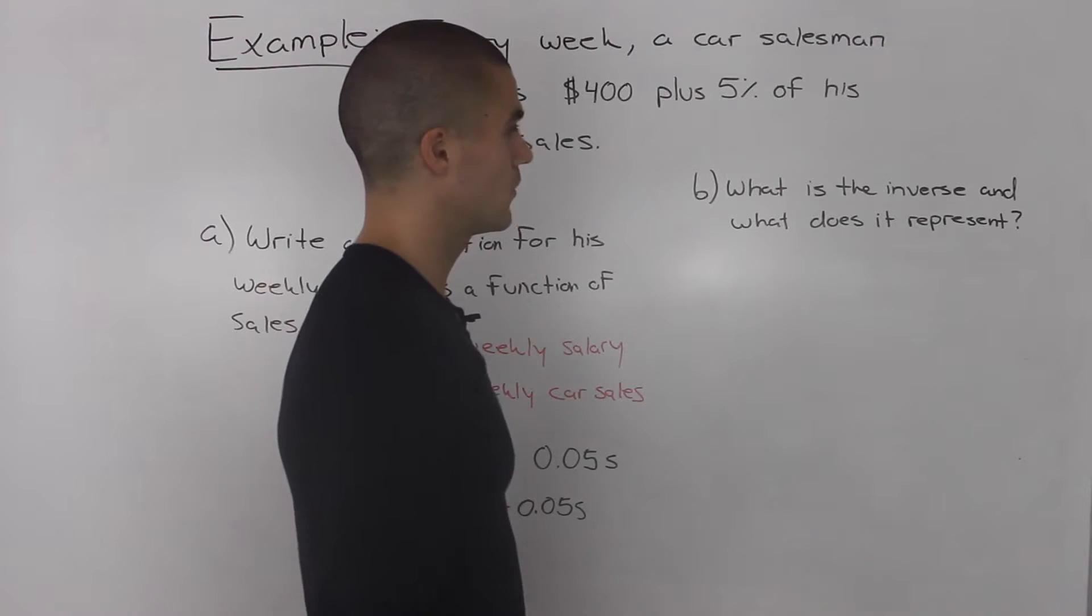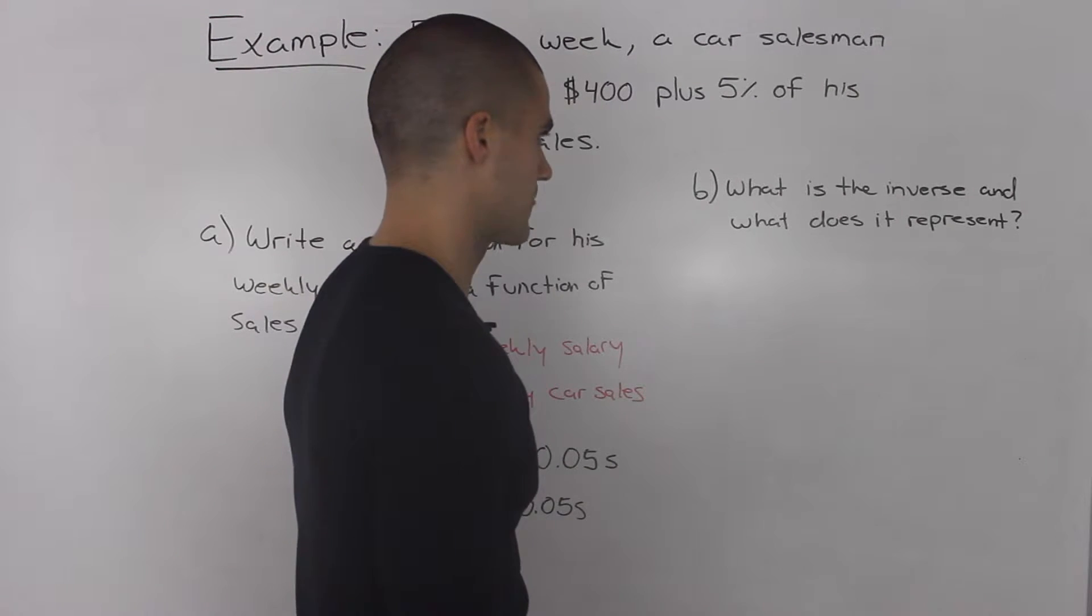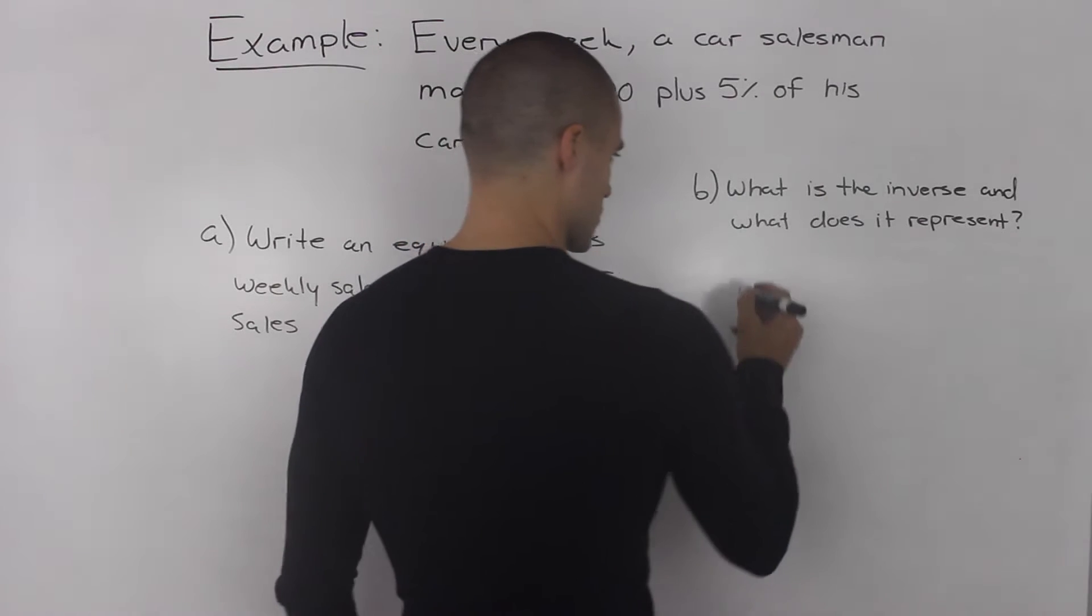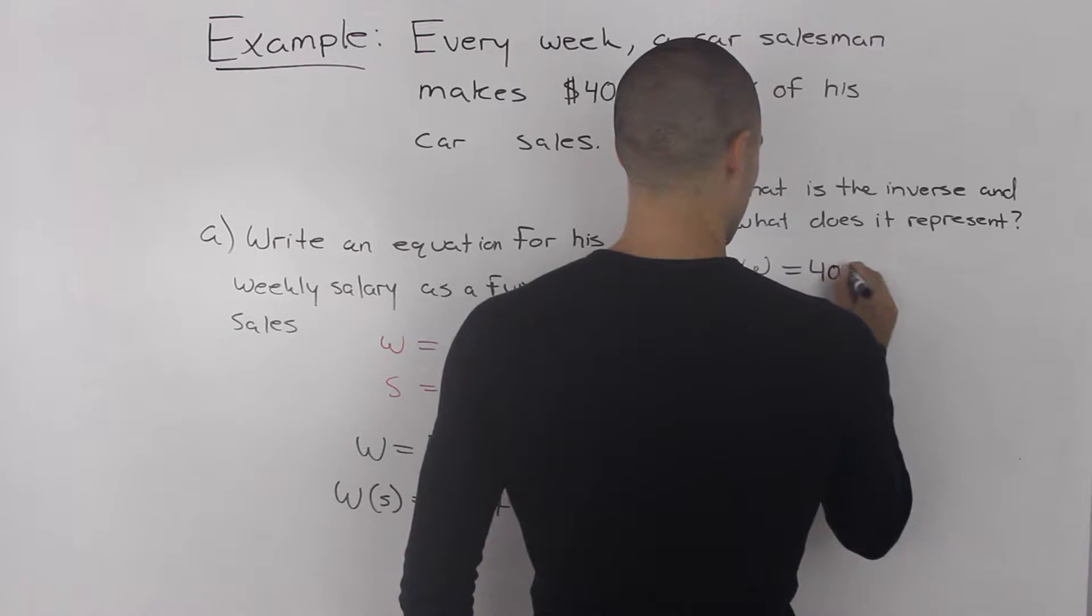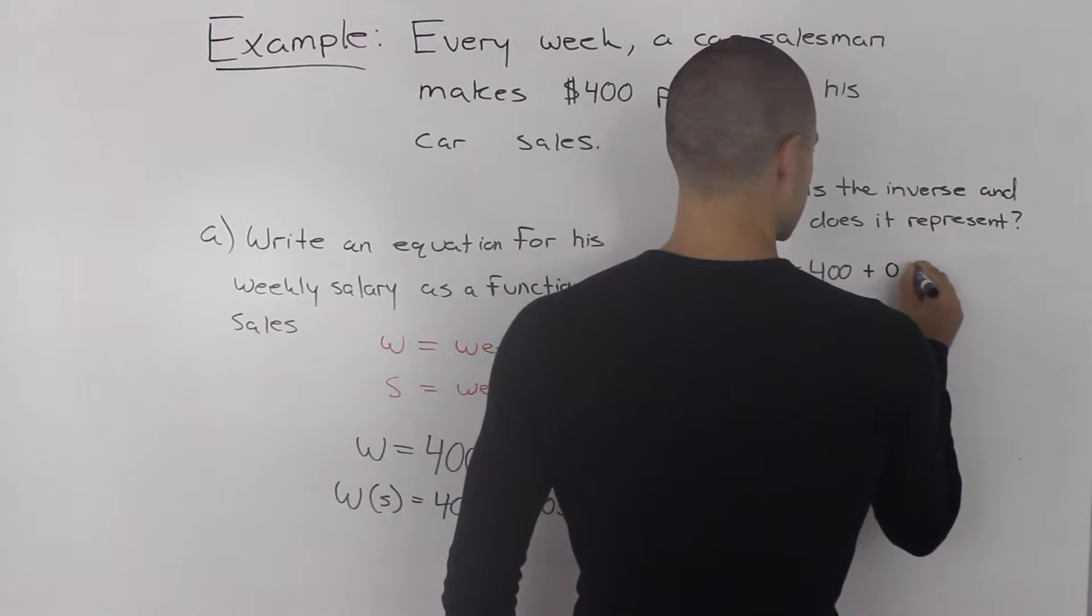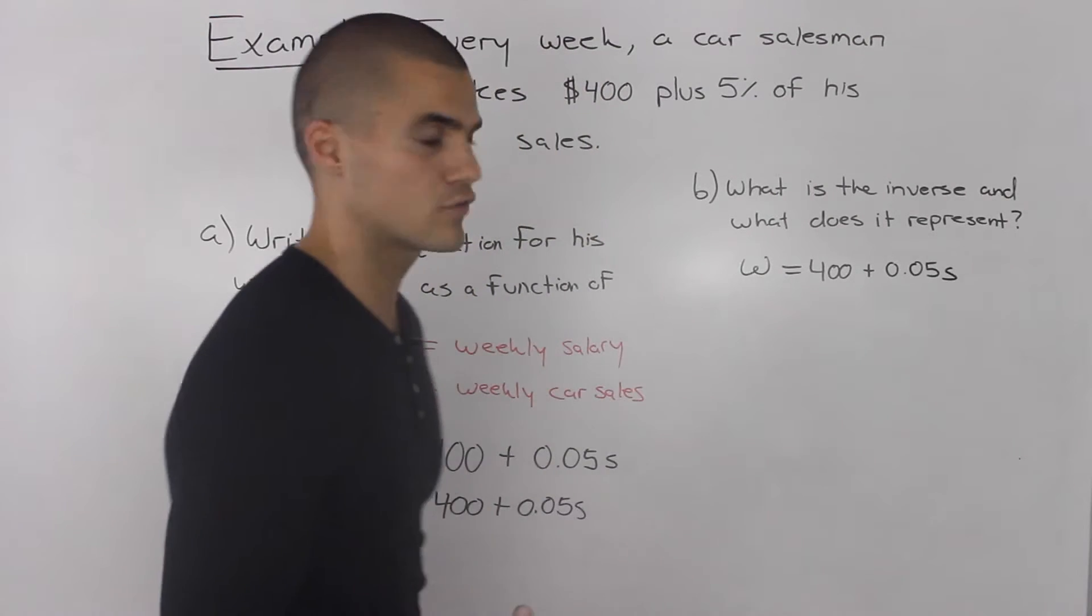Moving on to part B, what is the inverse of this function and what does it represent? Let's start off this question by writing out the function that we got in part A. We got this 400 plus 0.05 S. And now we have to find the inverse of it.